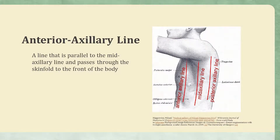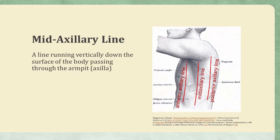The first is the anterior axillary line, which is a line that is parallel to the midaxillary line and passes through the skin fold to the front of the body. The midaxillary line is a line running vertically down the surface of the body, passing through the armpit, or the axilla.